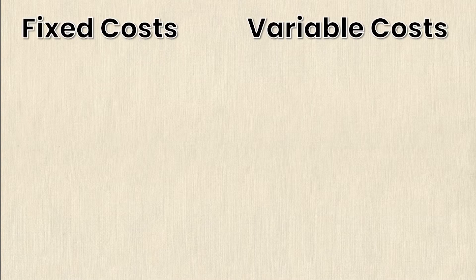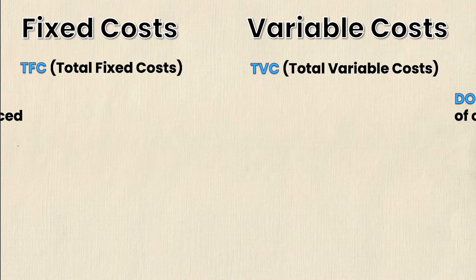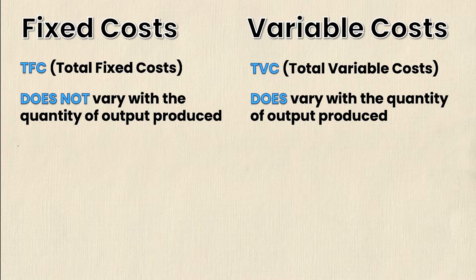A firm typically has two different types of costs: fixed costs and variable costs, denoted as TFC and TVC. The biggest difference between these two is how they change depending on how output changes. Fixed costs do not vary when quantity or output changes — you could produce one unit or 100 units and the fixed costs will always remain fixed at a specific value. Variable costs on the other hand do change; they go up or down as you produce more or less of your good.